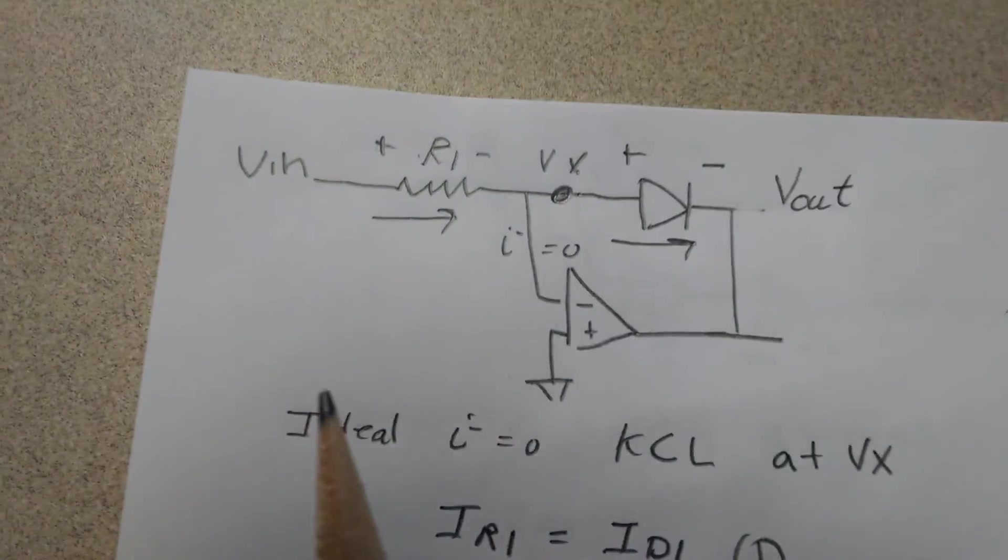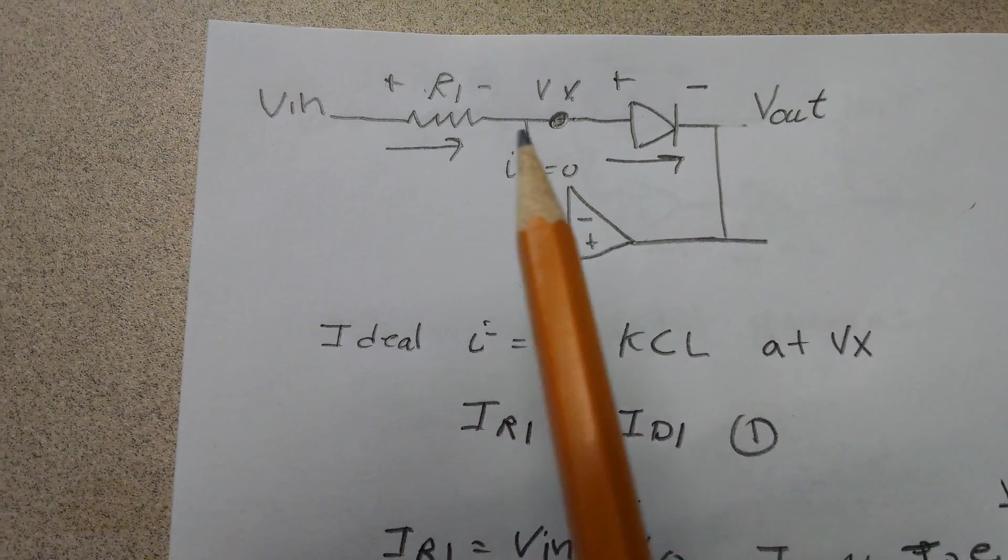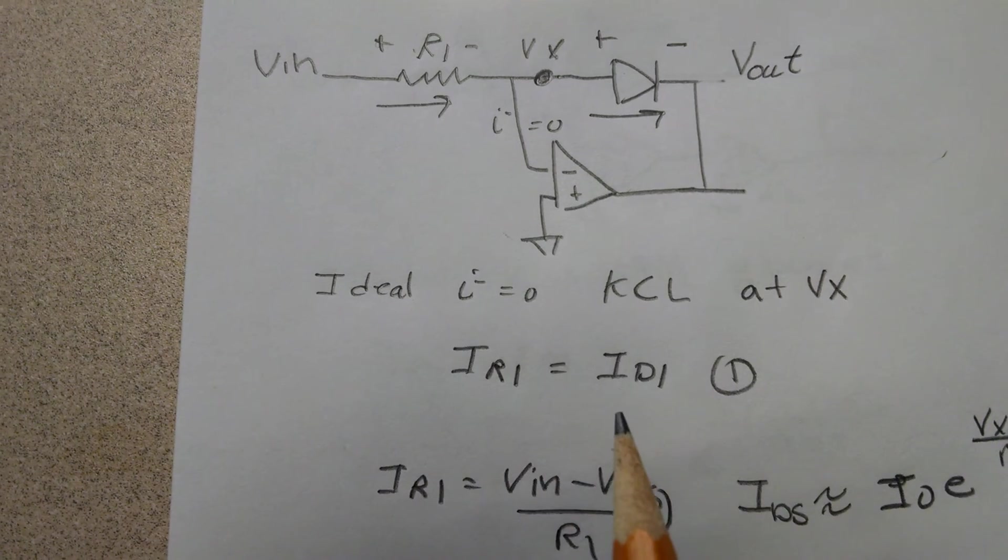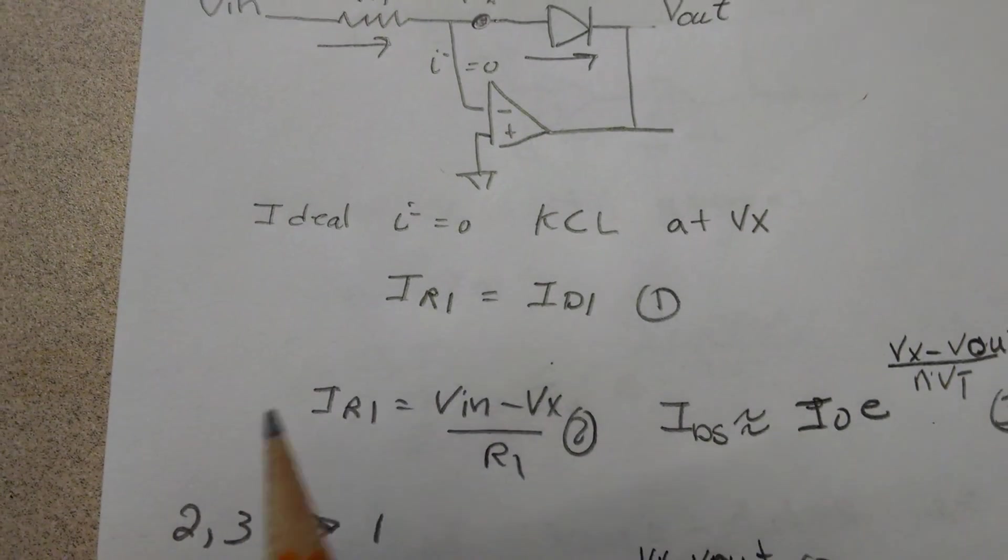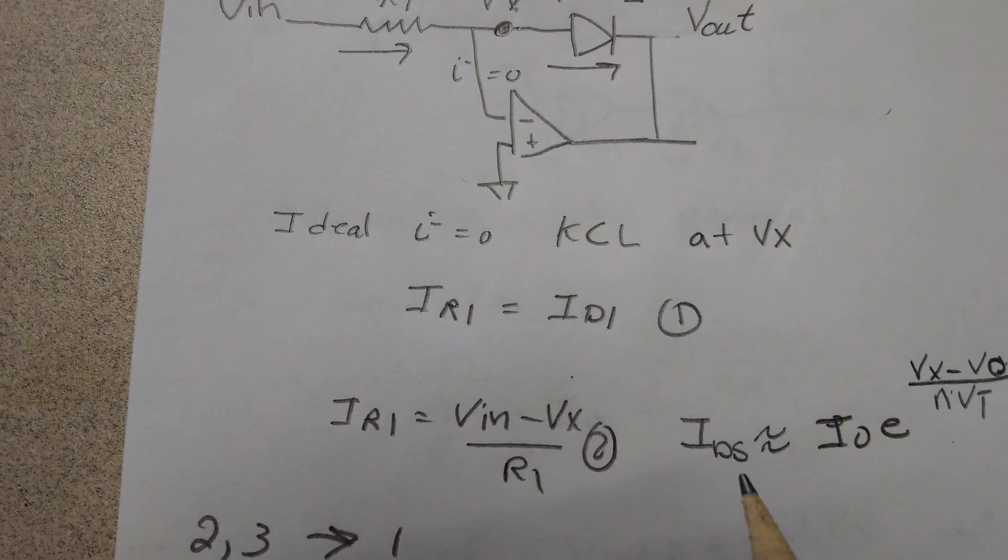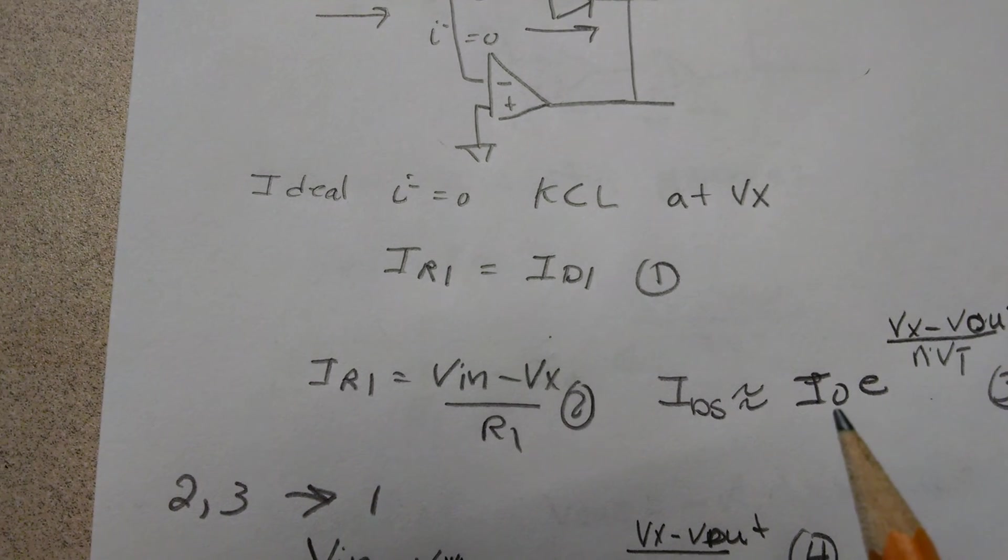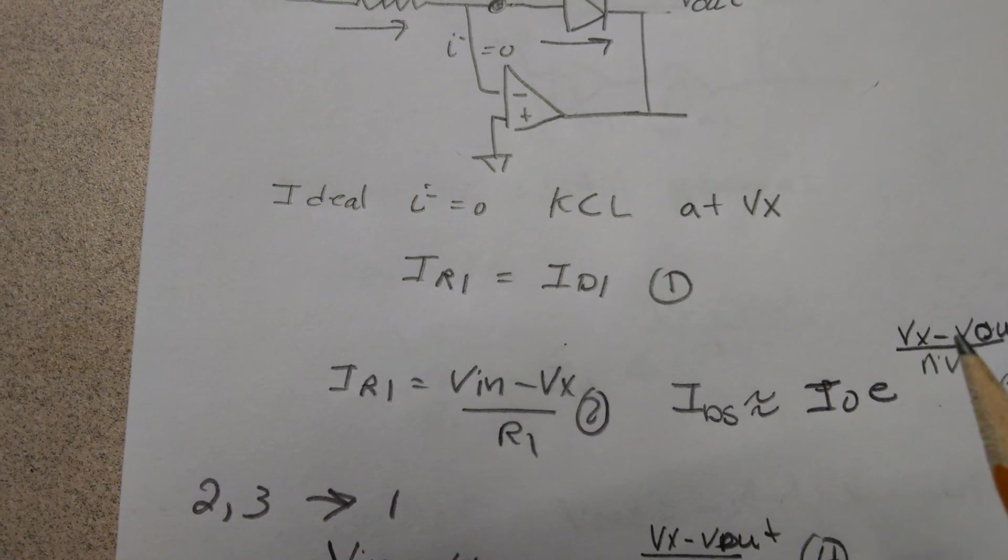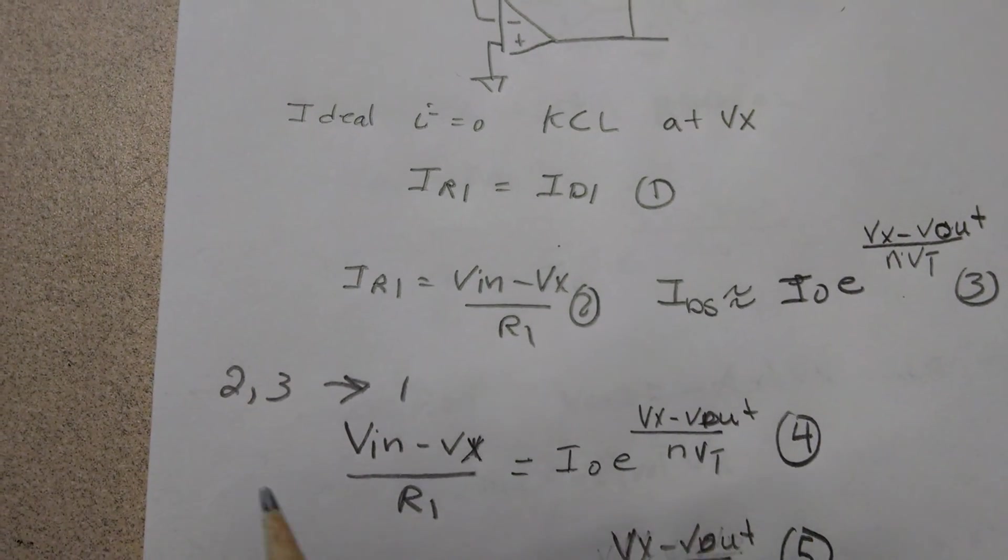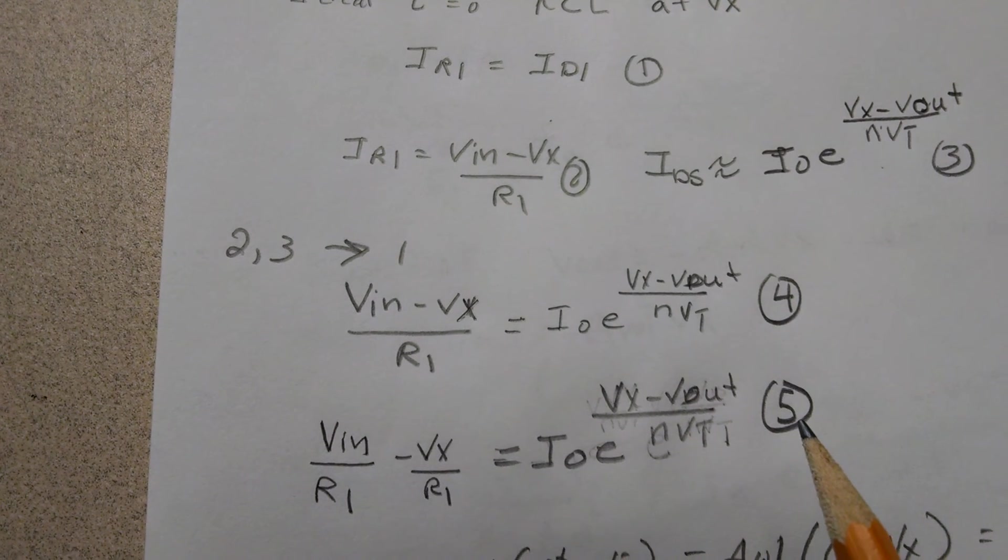Let's try another one with a diode, a logarithmic amplifier. We set up our KCLs: iR1 equals iD1. We use Ohm's law. In this case, (Vin - Vx) divided by R1. And the diode current is approximately equal to this equation, and it's Vx minus Vout because that's the definition of positive current. We substitute all that and we can get equation 5.